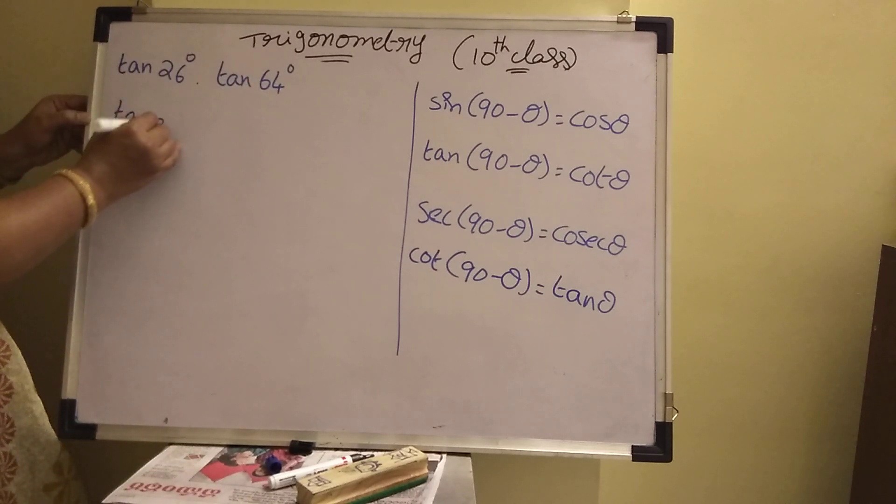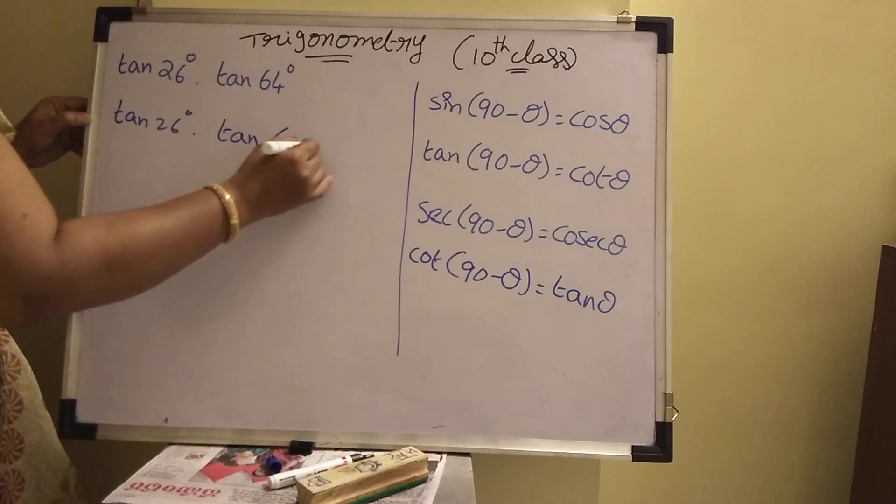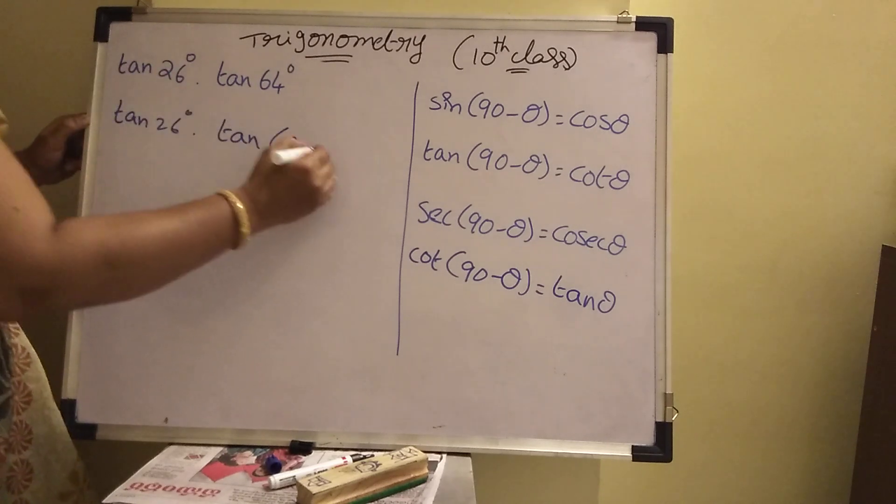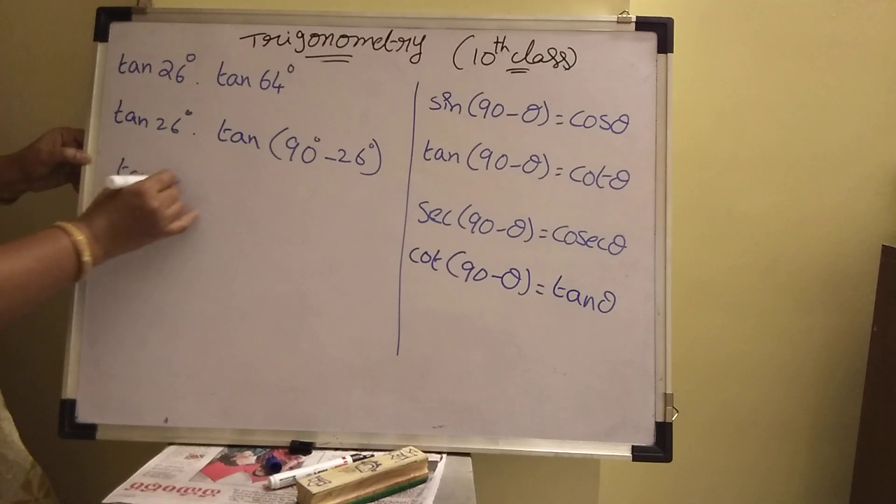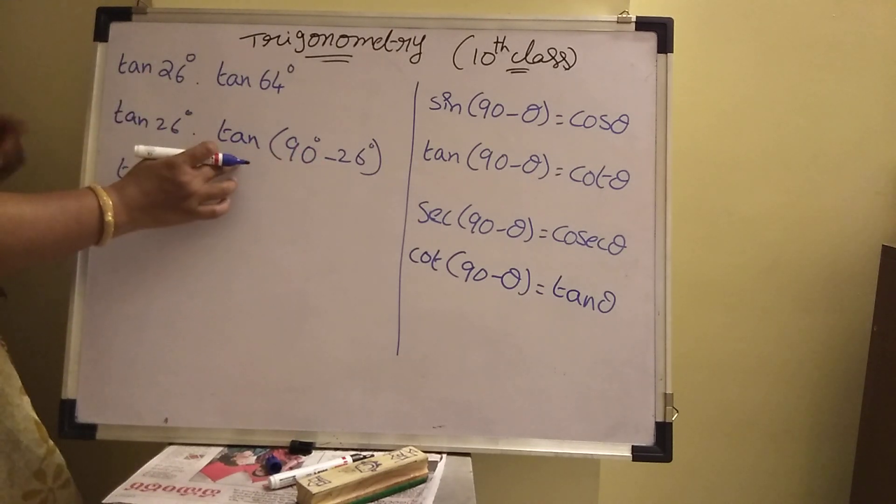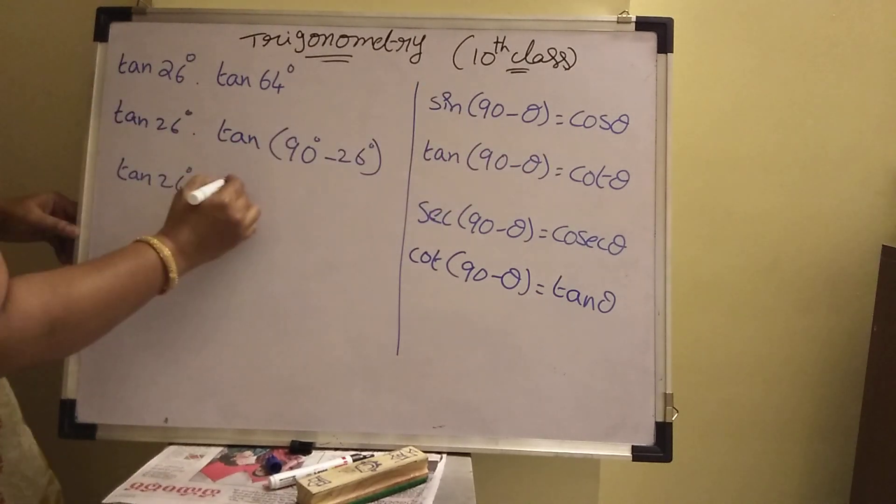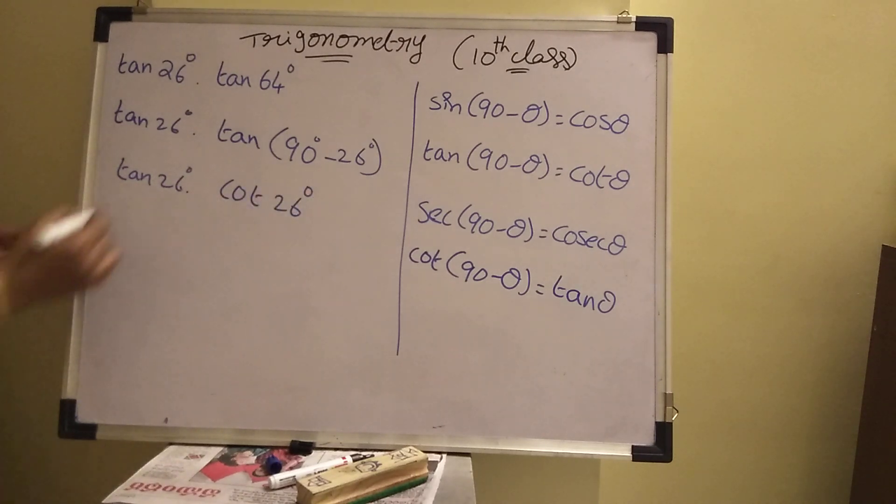Tan 26 degrees into tan of 90 minus 26 degrees. Tan 26 degrees into tan of 90 minus theta. 90 is there. That's why change function. Tan, it will be cot. That's why here, cot 26 degrees. Got it?